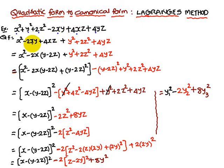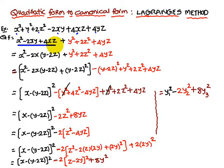One important point to remember here is that I am writing all the terms which have x at one place. This term, this term, and this term all have x. I am writing all these together, and the remaining terms that don't have x, I am writing at the end.